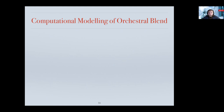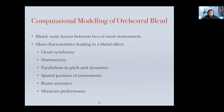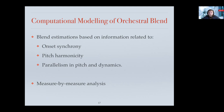Due to time constraints, we only detail our work for one orchestral effect — other effects can be discussed during the roundtable events. We'll discuss our development about modeling orchestral blend, which is a sonic fusion between two or more instruments. In regards to auditory scene analysis principles, sounds that have similar evolution are more likely to be grouped together following Gestalt principles. Research has suggested that onset synchrony, harmonicity, parallelism in pitch and dynamics, spatial position of instruments, room acoustics, and musician performance all contribute to orchestral blend. However, information about some of these characteristics is not present in symbolic information, so we base our blend estimation on onset synchrony, pitch harmonicity, and parallelism in pitch and dynamics, performing these calculations measure by measure.